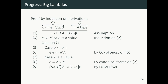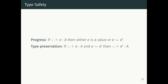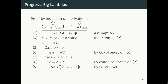We prove progress by induction on the typing derivation e colon A, and we prove preservation by induction on the evaluation relation. In progress there are really only two new cases — the term-level lambda and term-level application cases go exactly as in the simply typed lambda calculus. The new stuff only occurs for big-lambdas and type applications.